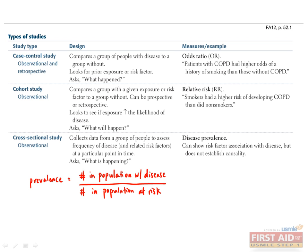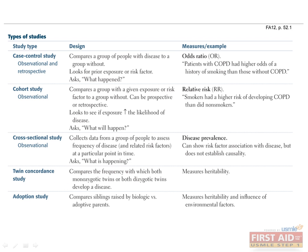Disease prevalence is defined as the proportion of people in a population who have a disease at a particular time. An example of a cross-sectional study would be looking at smokers versus non-smokers and their frequency of peripheral vascular disease. Here, you are collecting data in the present moment to assess the frequency of peripheral vascular disease within a group of smokers versus a group of non-smokers.